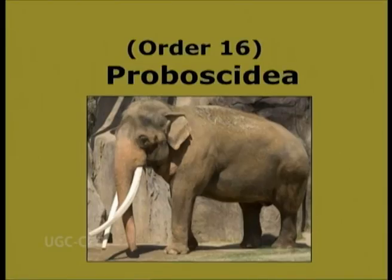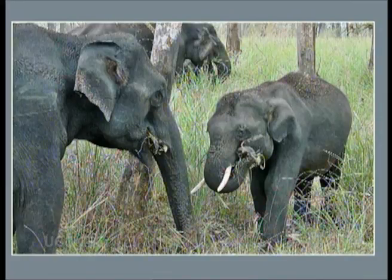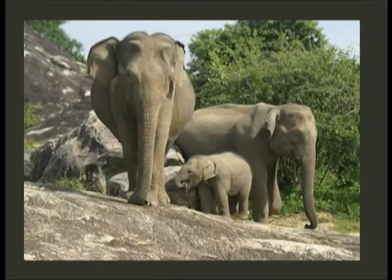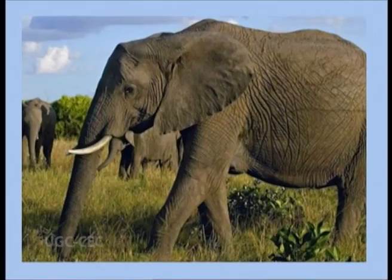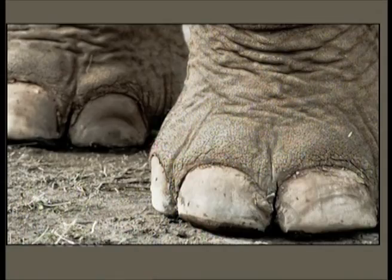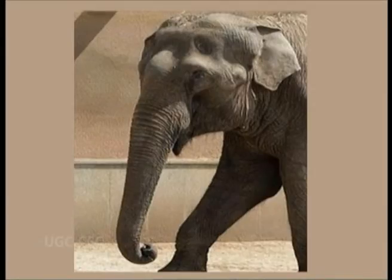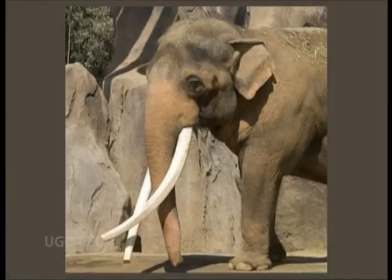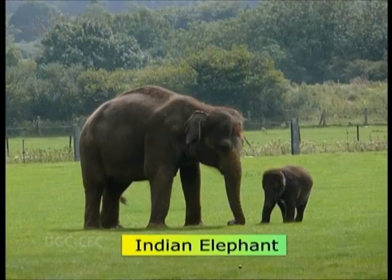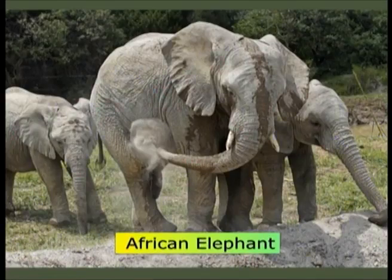Order 16: Proboscidea. Pro meaning in front, boskein meaning to eat. Largest living land animals having large head, massive ears, thick and practically hairless skin, bulky straight legs, three to five toes with small nail-like hoofs. The conspicuous feature is the nose and upper lip modified as a long flexible proboscis or trunk. Two upper incisors elongated as ivory tusks. Cheek teeth lophodont. Asiatic and African elephants are the worldwide examples of this order.